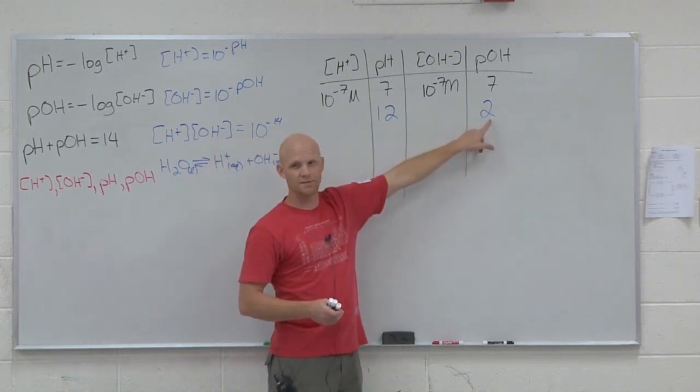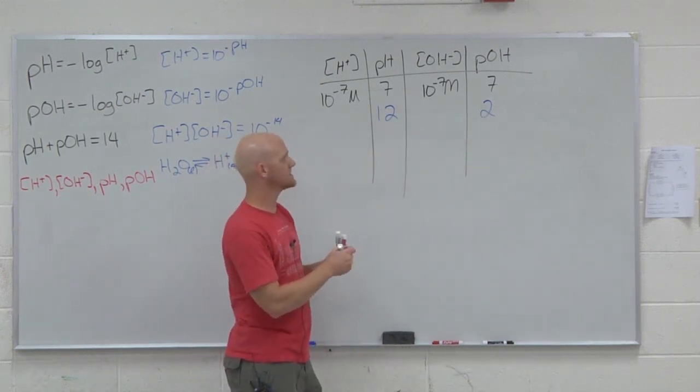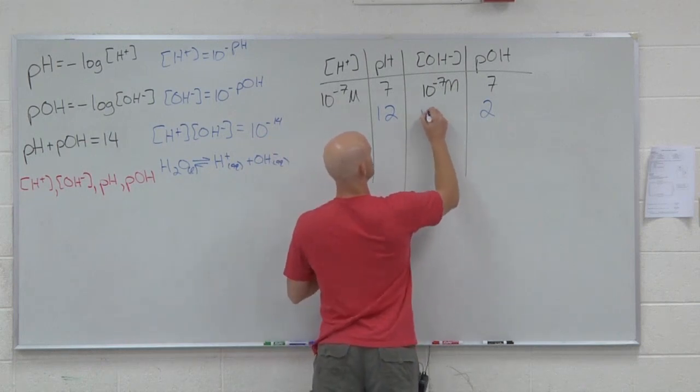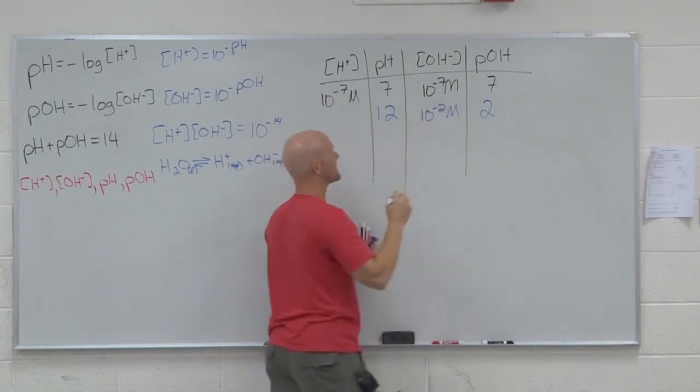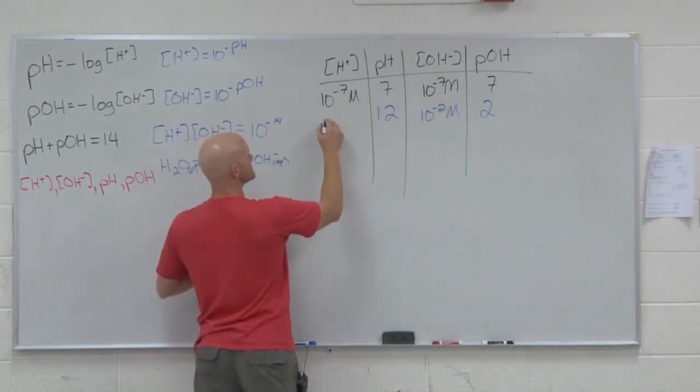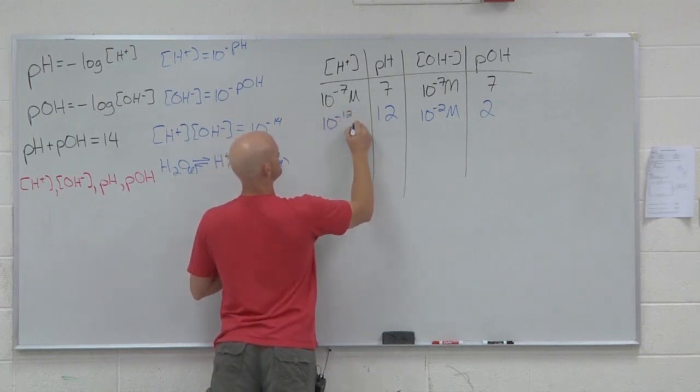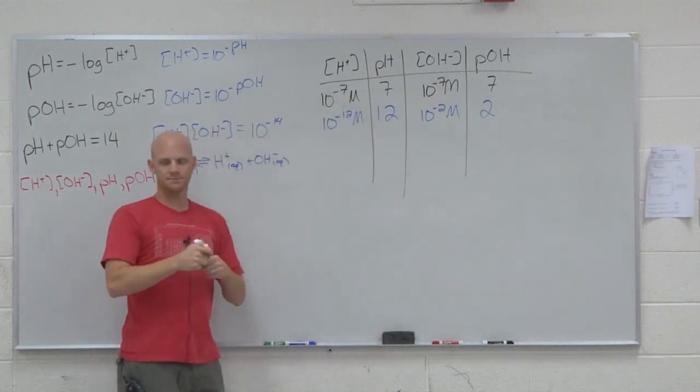If the pOH was two again, what is the hydroxide concentration? 10 to the negative two, what's the H plus concentration? 10 to the negative 12 molar. Sweet.